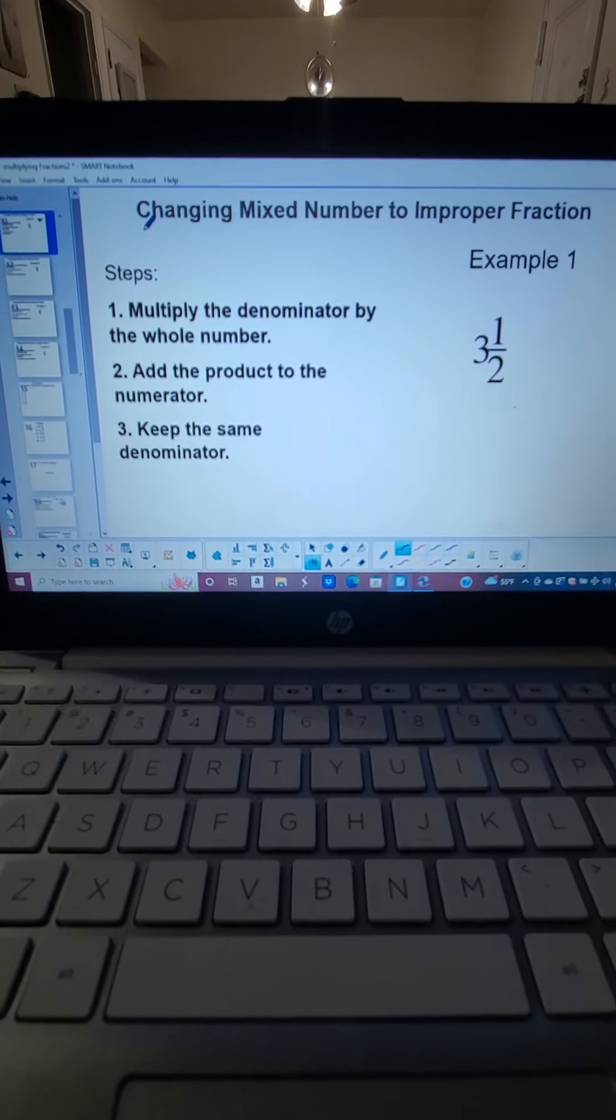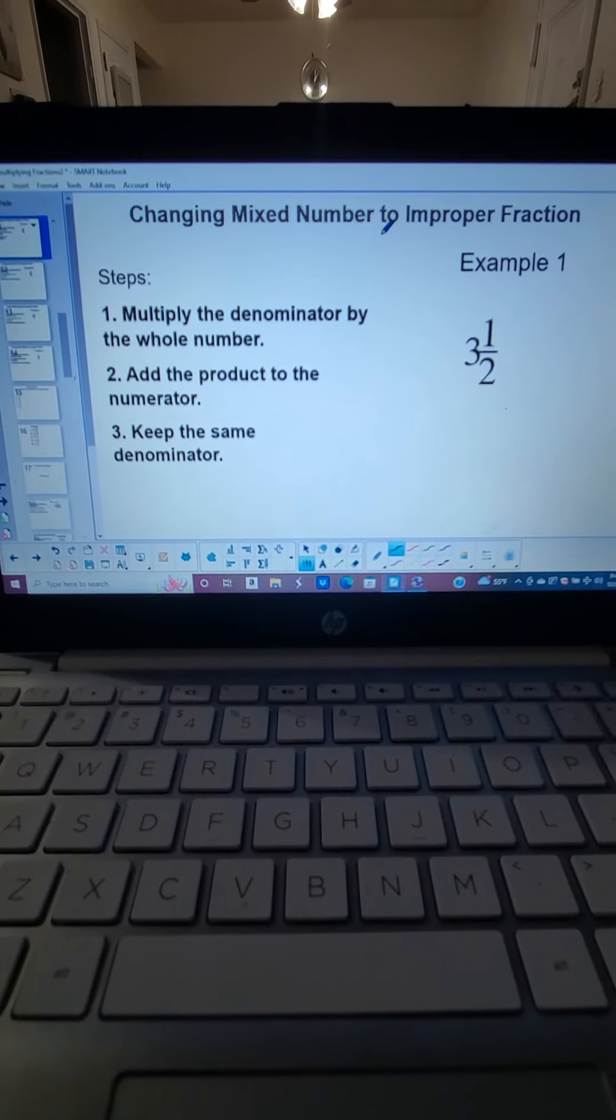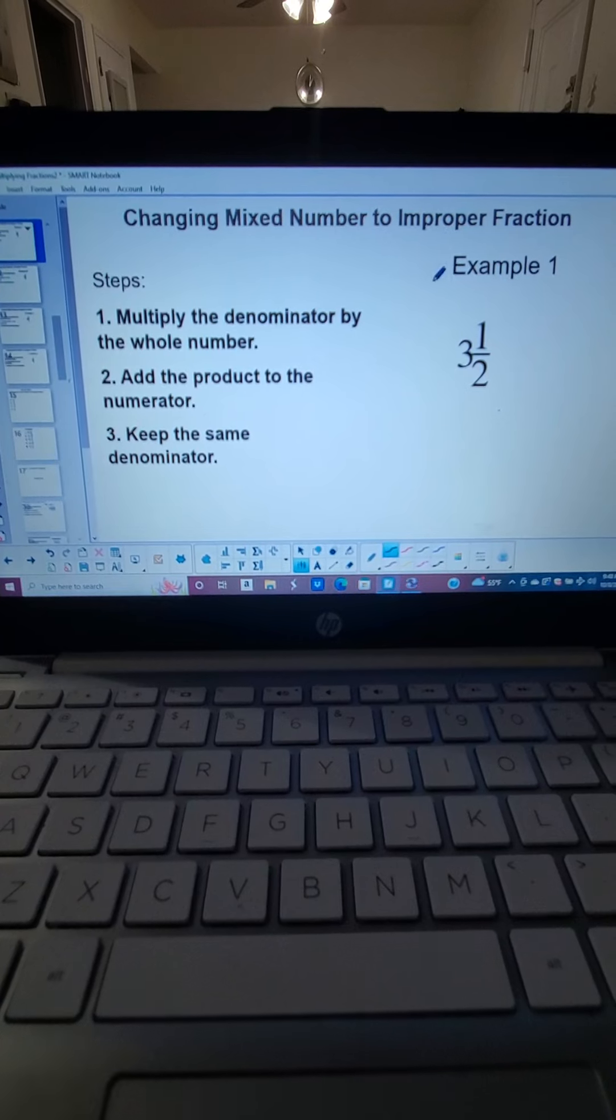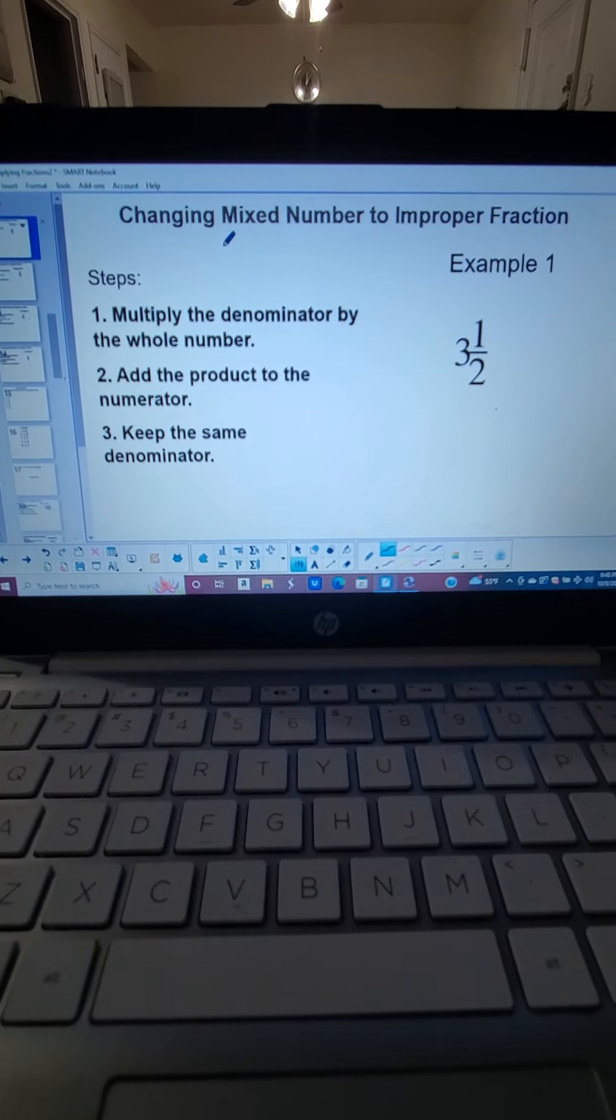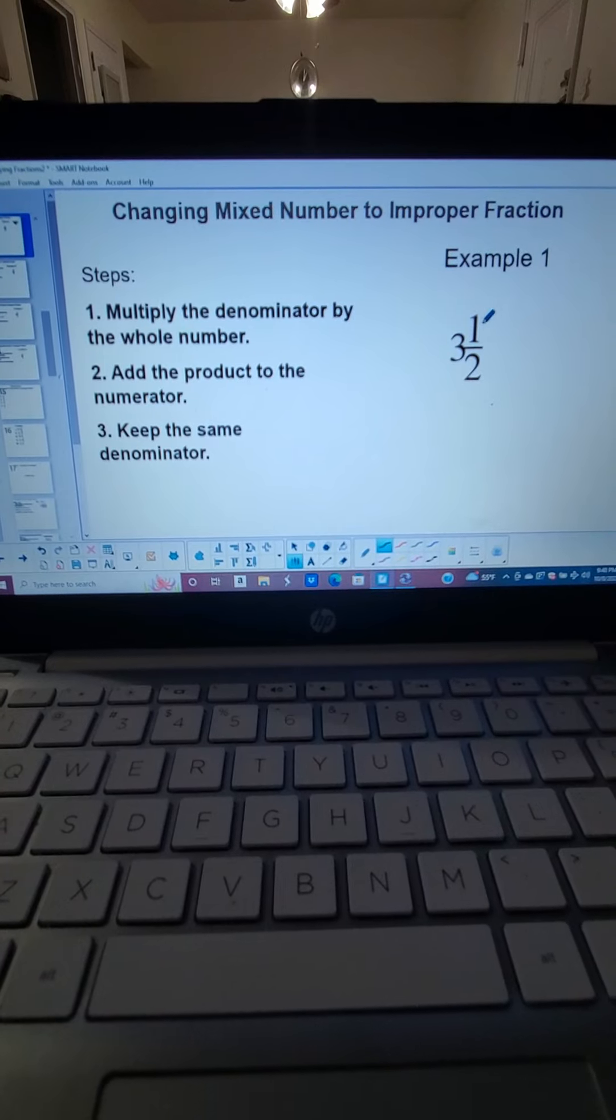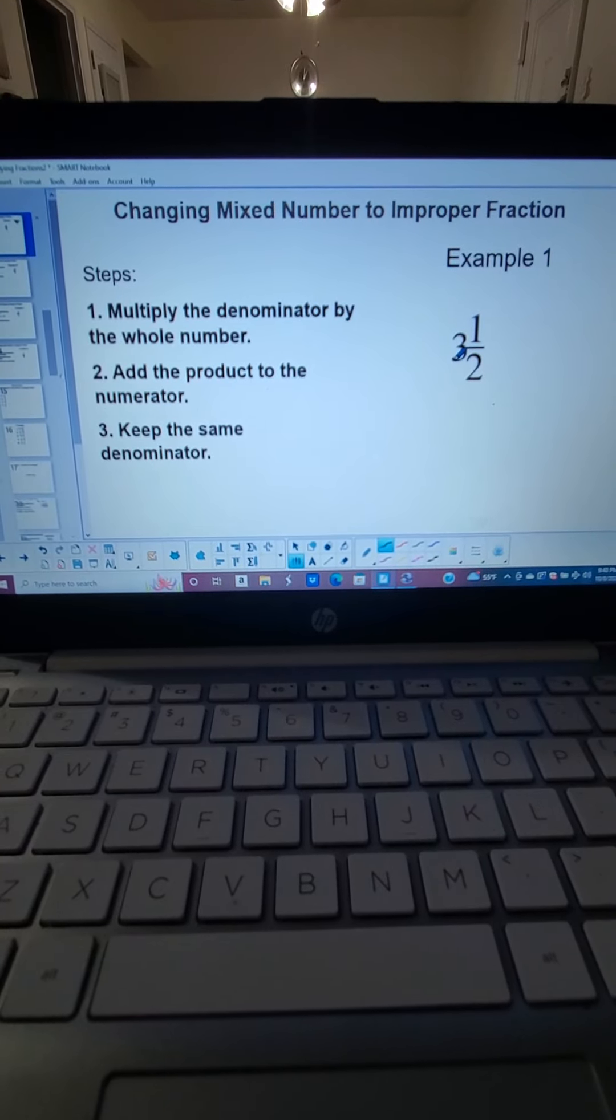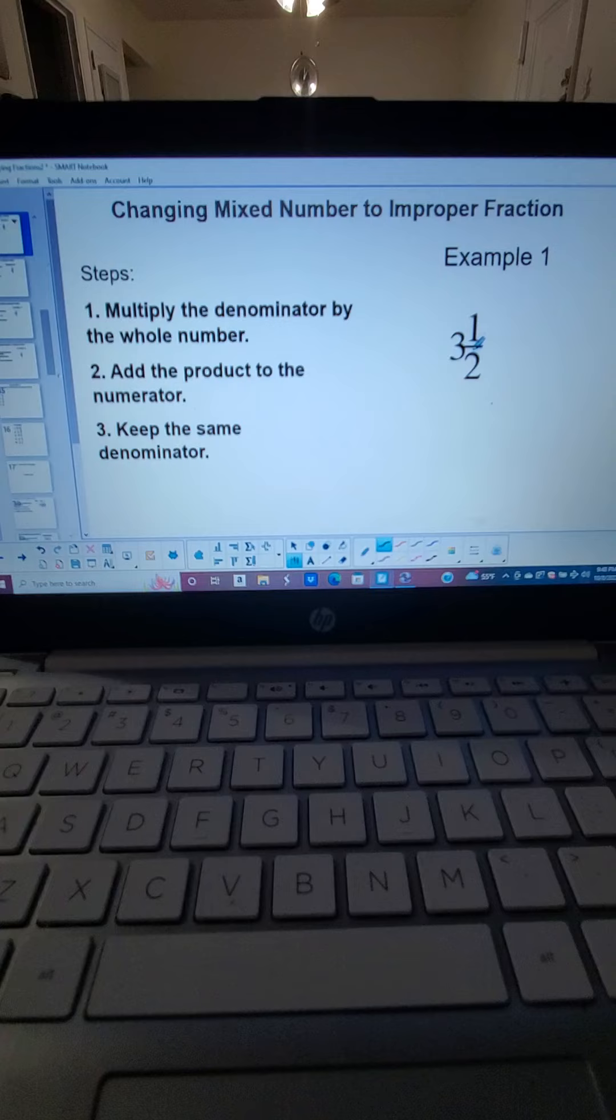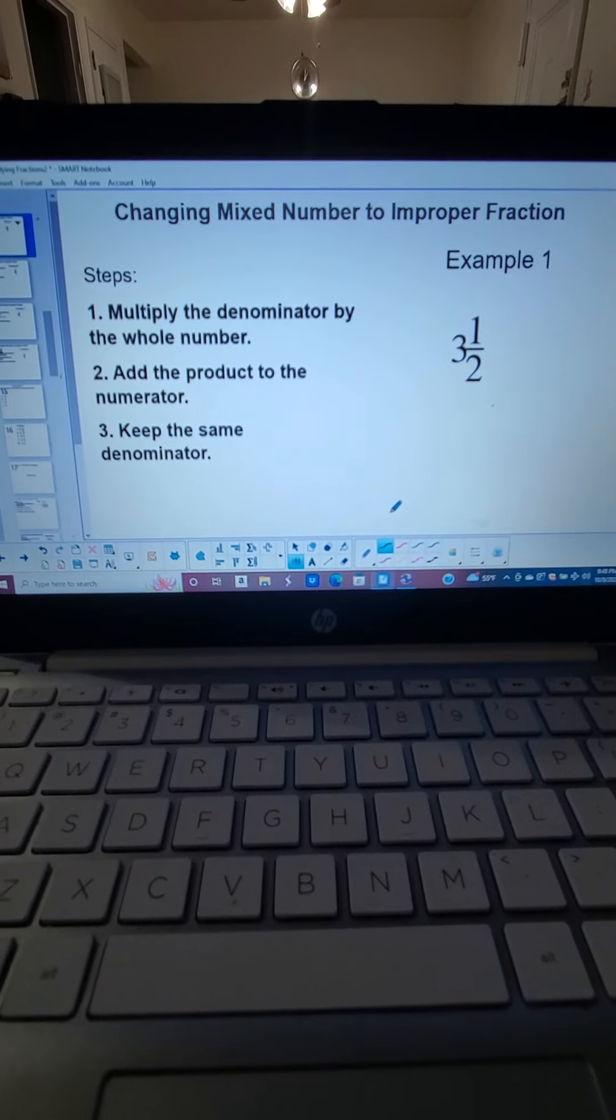So our lesson for today is changing mixed number to improper fraction. Mixed number is the number that is a combination of a whole number and a fraction. In this case, 3 is the whole number and 1 half is the fraction.